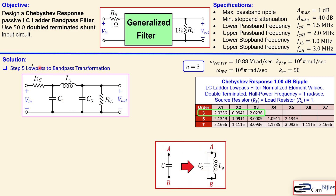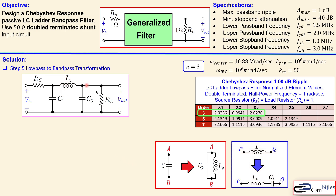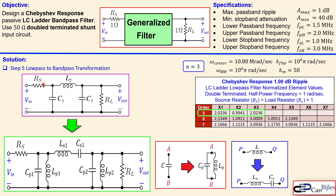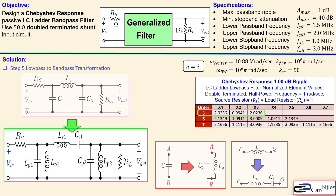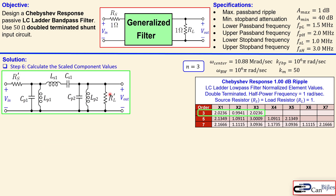The transformation from low-pass to band-pass works as follows: all capacitors are replaced by a parallel combination of an inductor and capacitor, and all inductors are replaced by a series combination of an inductor and capacitor — P is for parallel and S is for series. So this circuit is transformed: instead of three reactive components we now have six reactive components, two times larger. We will use prime notation for the scaled values of RS and RL.